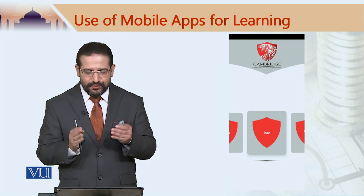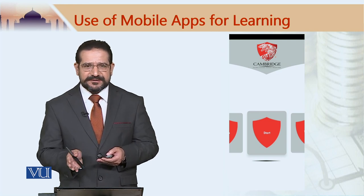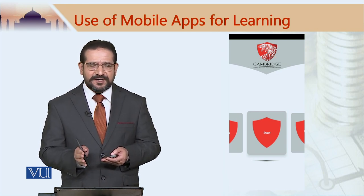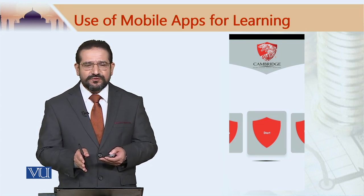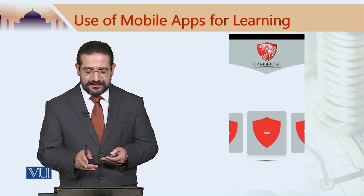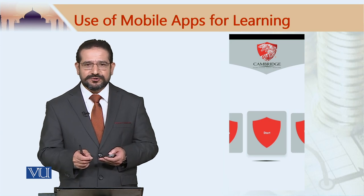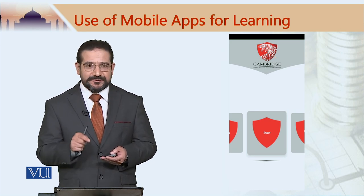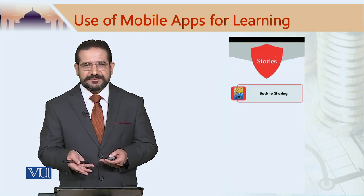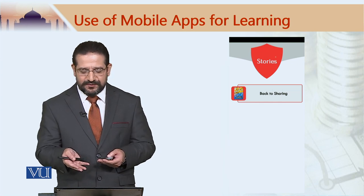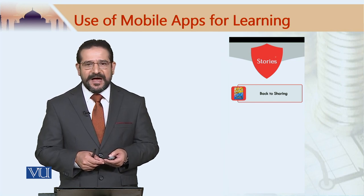You would go to a page which asks you to start, with settings on the right-hand side and other options on the left. If you do not want to continue in English, you would go to the settings and choose a language — Pashto, for example, if that is your preference. Once you have chosen a language, you proceed to the next screen and it takes you to a story called Back to Sharing.